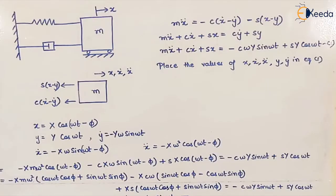To find the equation of displacement transmissibility we will use the analytical method. For force transmissibility we have already done the graphical method. We consider a lumped parameter system: a mass with a spring of stiffness s and a dashpot with damping coefficient c. The fixed foundation has displacement y, and because of this, the mass experiences a displacement x.